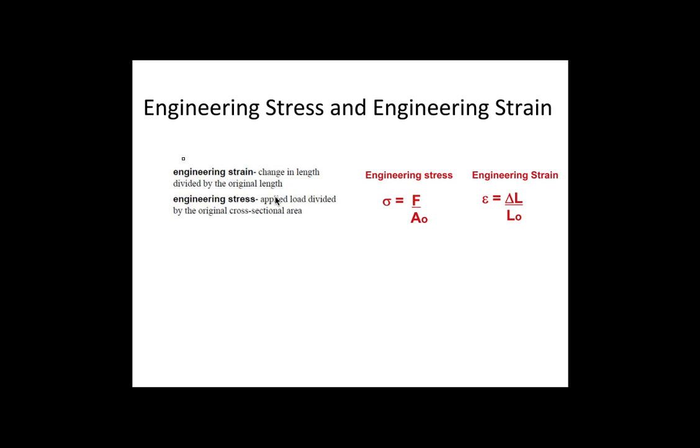Our first two definitions are engineering strain and engineering stress. Now engineering strain is defined as the change in length divided by the original length. This is mathematically represented over here and the symbol that we use for strain is a lowercase epsilon.